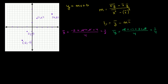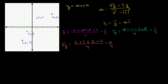Now let's figure out the mean of the xy's. We have negative 2 times negative 3, which is positive 6; plus negative 1 times negative 1, which is positive 1; plus 1 times 2 is 2; plus 4 times 3 is 12. All over 4 points. That's 6 plus 1 is 7, plus 2 is 9, plus 12 is 21, so the mean of xy is 21 over 4.